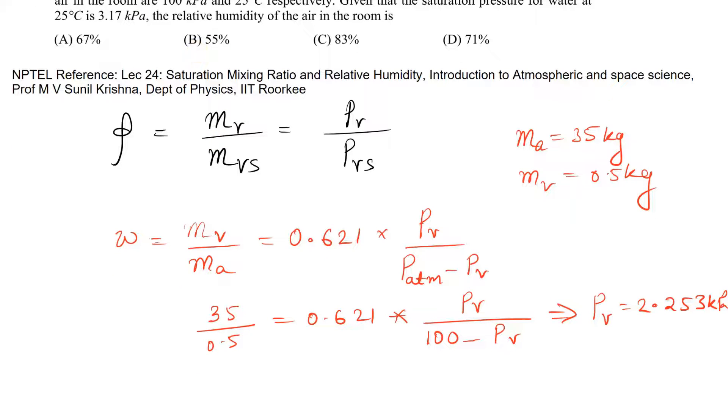Now our goal is to find phi, the relative humidity. Phi equals Pv divided by Pvs, which is 2.253 divided by 3.17 as given in the problem.